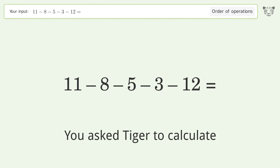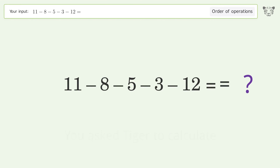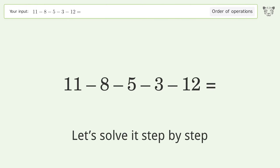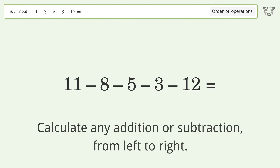You asked Tiger to calculate. This deals with the order of operations. The final result is negative 17. Let's solve it step by step.